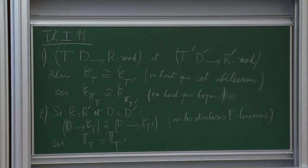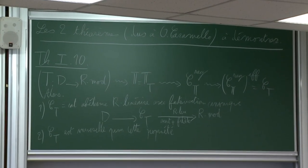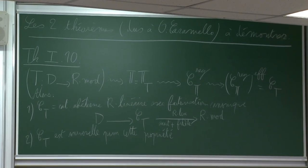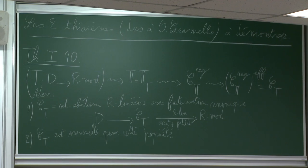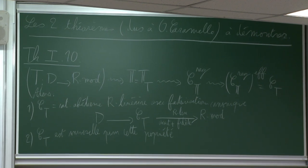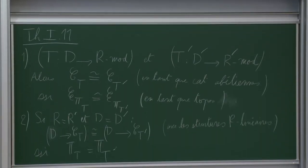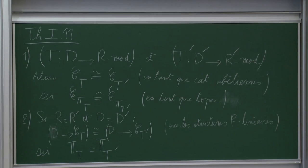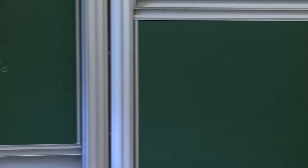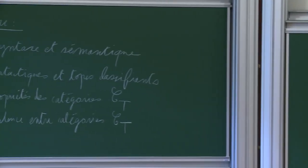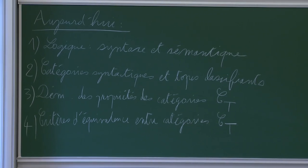Last time we saw in paragraph 3 that these two theorems have consequences for the motif, but these are theorems of categories. Today, we will be entirely in the context of the theory of categories, and more precisely, of the theory of categories with some associated notions which are not generally known to algebraic geometers.